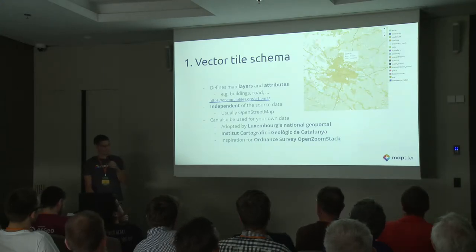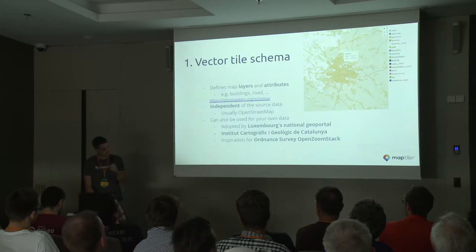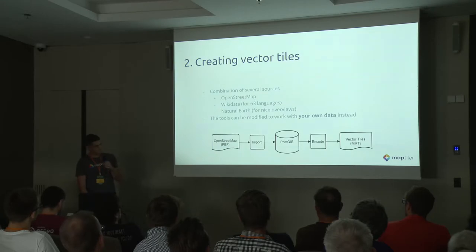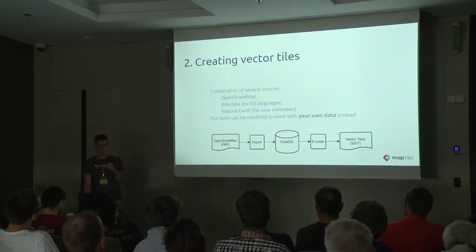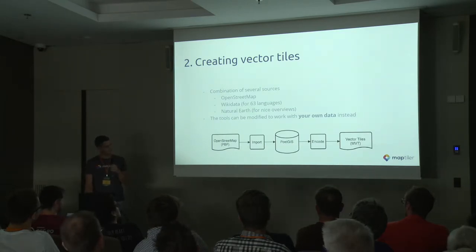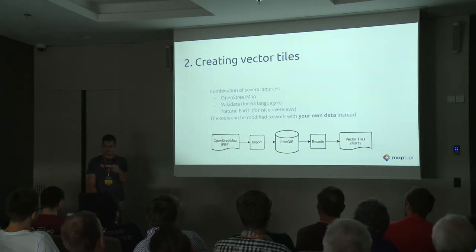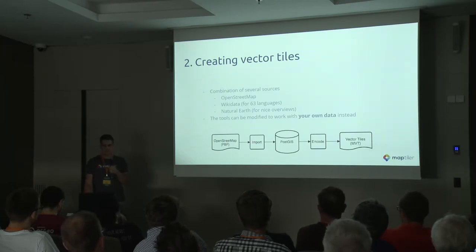The schema is designed to be independent of the source data, so although it's standard to use OpenStreetMap, there are other institutions and organizations transforming their own data into OpenMapTiles schema vector tiles, such as Luxembourg's National GeoPortal or the Cartographic Institute of Catalonia. The open source part of the project is a set of tools for importing data from OpenStreetMap, Natural Earth, and Wikidata for languages, and transforming it all into Mapbox vector tiles encoded as PBF inside an MBTiles container.